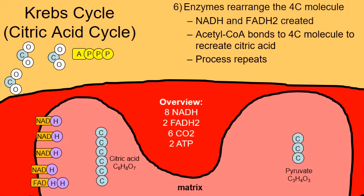Looking at an overview of the Krebs cycle: only two molecules of ATP are created — one from each pyruvate. The big prize of the Krebs cycle is not the ATP but all the NADH and FADH2 created. Those molecules are really important in the electron transport chain, so let's look at that next.